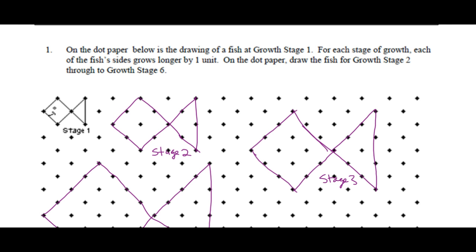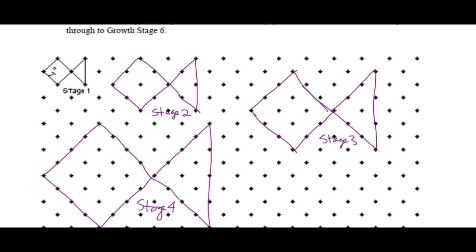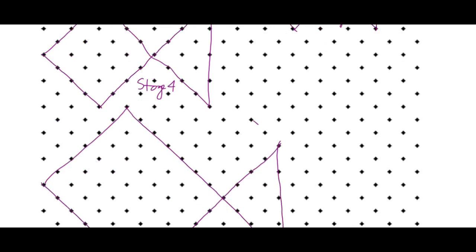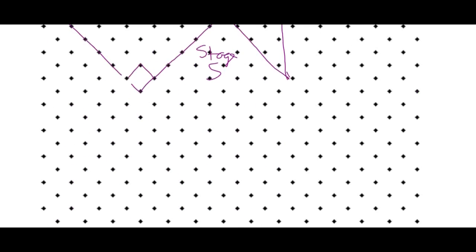We have drawn fishes, stage 1, stage 2, stage 3, stage 4, stage 5, stage—I ran out of space.